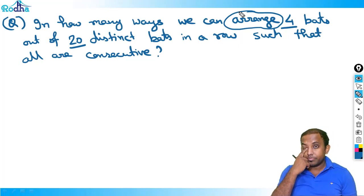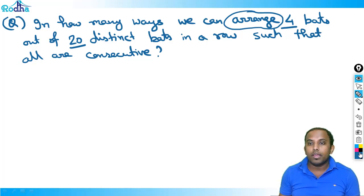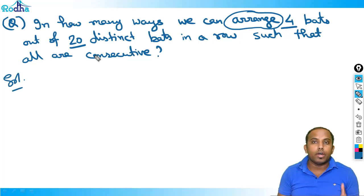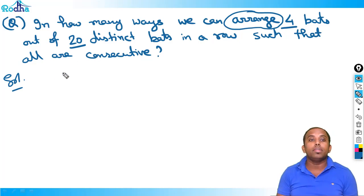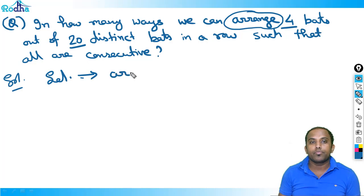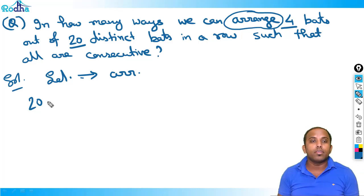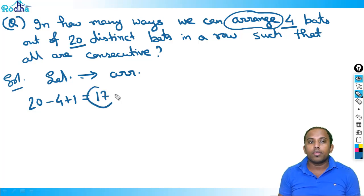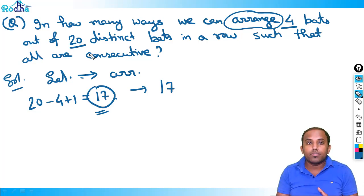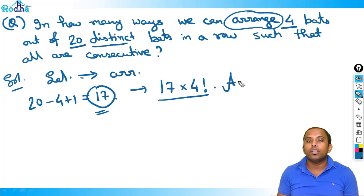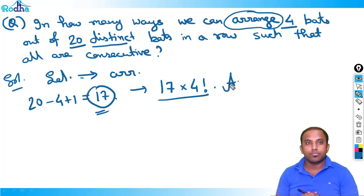So what is the answer for this question? If you have to do arrangement, always first do selection and then do arrangement. So out of 20 bats, how many ways can you select four consecutive bats? That's 17, as we saw in the last slide. But in this case you also have to arrange those four bats — all are distinct bats, so you can arrange them in 4! ways. So the answer is 17 × 4!.